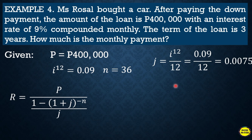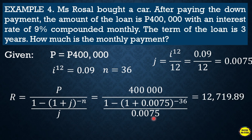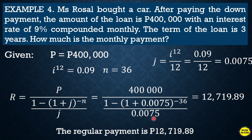To find the regular payment, we use the present value annuity formula — since present value is given. Substituting: Regular Payment = 400,000 ÷ [(1 − (1 + 0.0075)^(−36)) ÷ 0.0075]. The answer is twelve thousand seven hundred nineteen point eighty-nine. So Miss Rosal's monthly payment is twelve thousand seven hundred nineteen pesos and eighty-nine centavos.